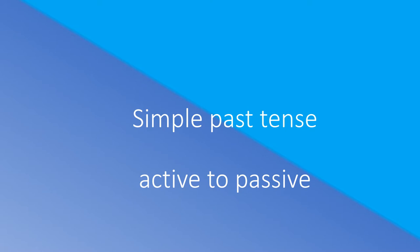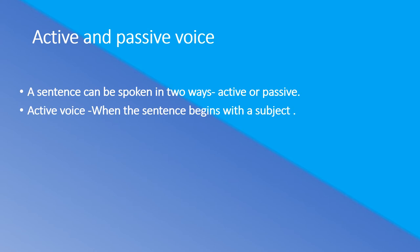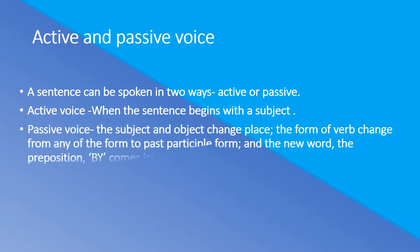Simple Past Tense — Active to Passive. A sentence can be spoken in two ways: active or passive. Active voice: when the sentence begins with a subject. Passive voice: the subject and object change place, the form of the verb changes from past tense form to past participle form, and the preposition 'by' comes into the sentence. For example: